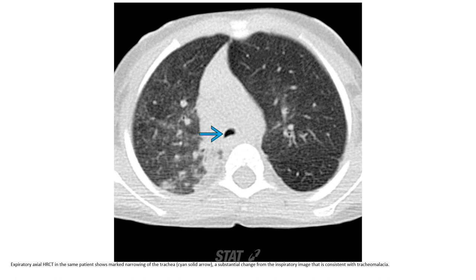This is the expiratory axial high-resolution CT in a patient showing marked narrowing of the trachea on the expiratory image, consistent with tracheomalacia.